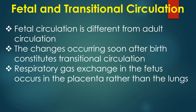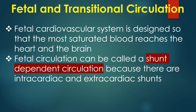Fetal circulation is different from adult circulation. Changes occurring soon after birth constitute transitional circulation. Respiratory gas exchange in the fetus occurs in the placenta rather than the lungs. The fetal cardiovascular system is designed so that most saturated blood reaches the heart and brain. Fetal circulation can be called a shunt-dependent circulation because there are intracardiac and extracardiac shunts.